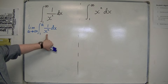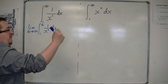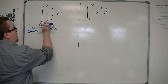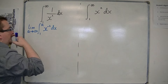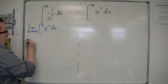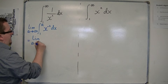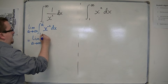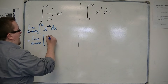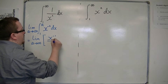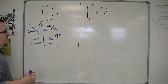1 over x squared — I'm not going to integrate it that way. I want to write it as x to the something, so this is x to the minus 2. Now I can say: this is the limit as a tends to infinity of — add 1 to the power and divide by the new power — so x to the minus 1 divided by minus 1, evaluated between 1 and a.